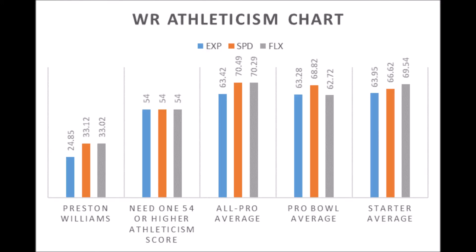This is data from his pro day. He had a 24.85 explosive lower body strength score, a 33.12 speed score, and a 33.02 flexibility score.